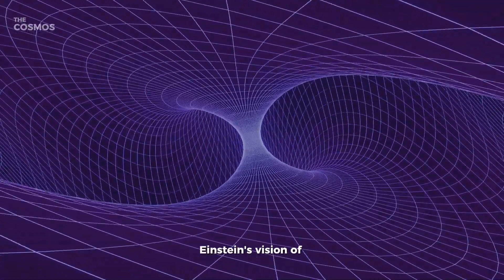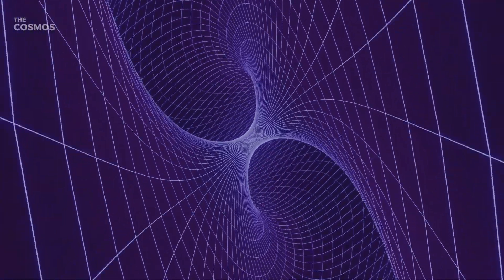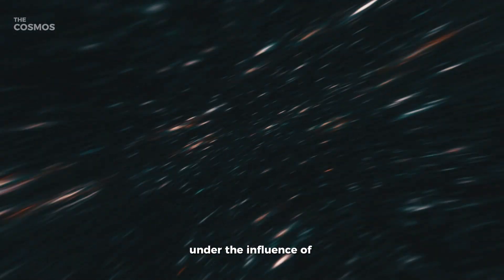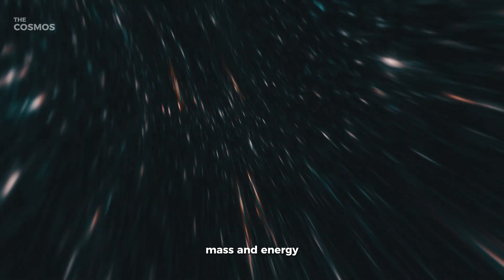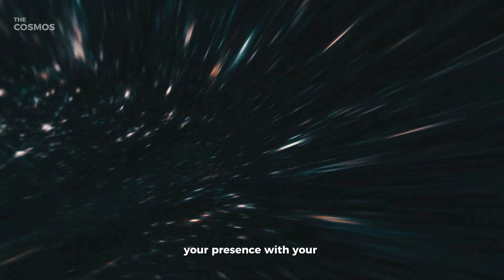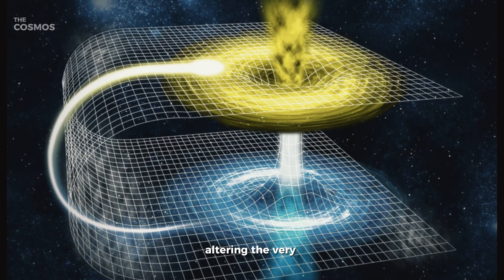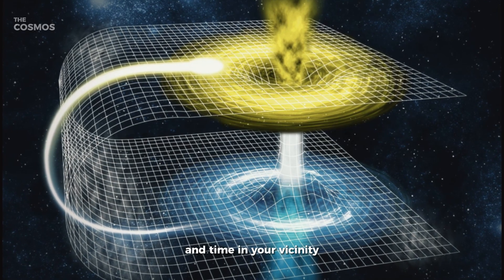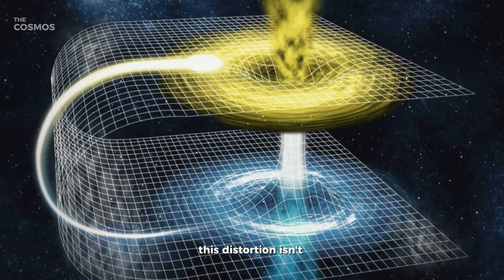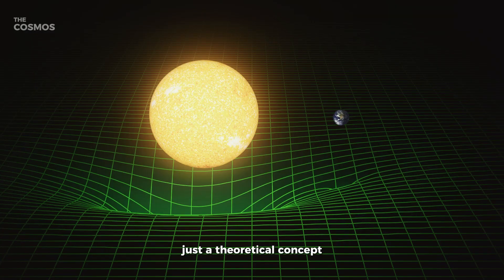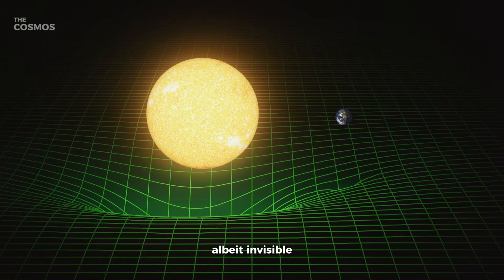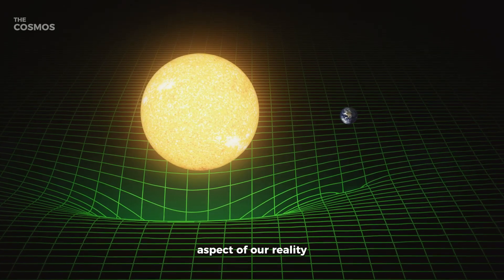Einstein's vision of spacetime is akin to a flexible membrane, stretching and warping under the influence of mass and energy. Your presence, with your mass and energy, distorts spacetime around you, altering the very nature of space and time in your vicinity. This distortion isn't just a theoretical concept—it's a tangible, albeit invisible, aspect of our reality.